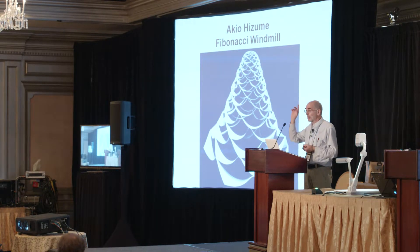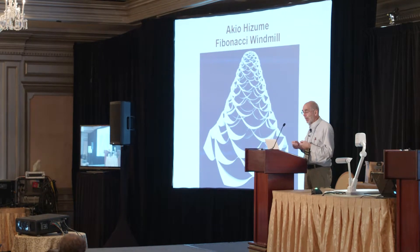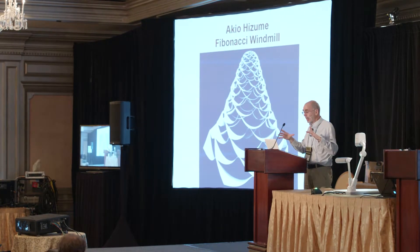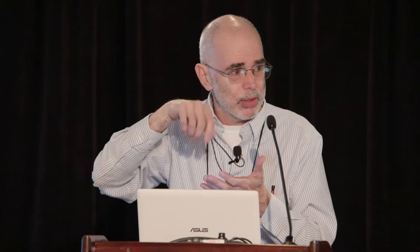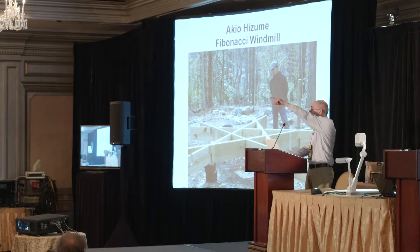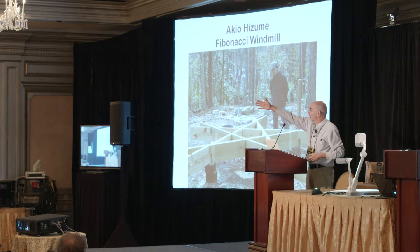Akio Hizume, who has a table of cool things in the lobby, has paper templates to make a Fibonacci windmill. You cut slots along the lines in his template and bend it just the right way, and this makes a very delicate thing with a kind of phyllotaxis pattern. Akio is over there — he's got one right there that twirls and whirls.